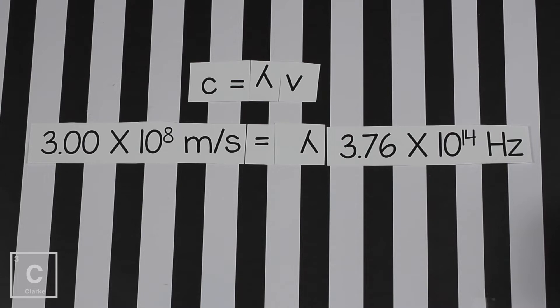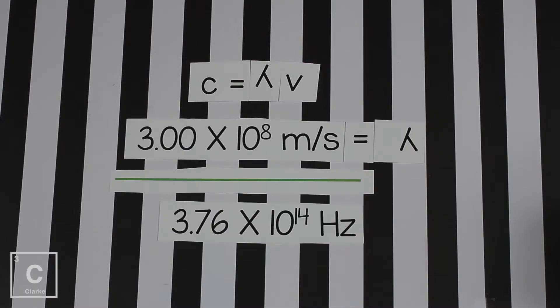We need to solve for wavelength. So we need this problem to say wavelength equals. So we want to get wavelength all by itself. So let's rearrange this. To get lambda by itself, wavelength, we need to divide. The speed of light divided by the frequency. Or 3.00 times 10 to the 8 divided by 3.76 times 10 to the 14.